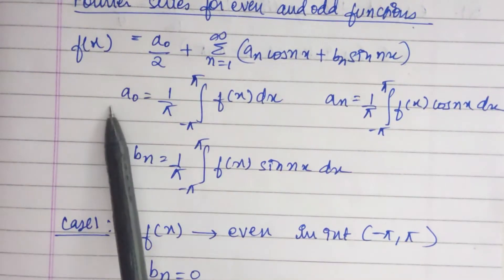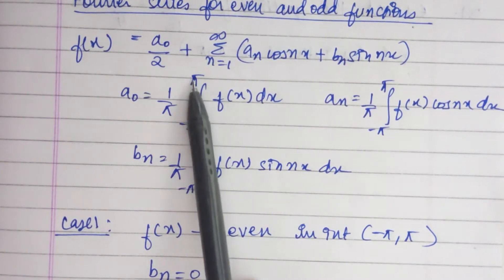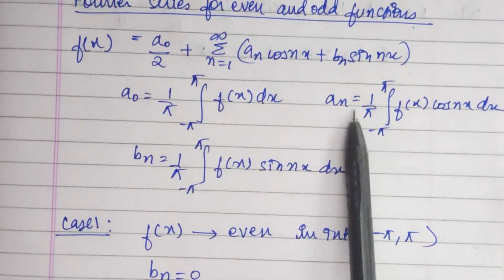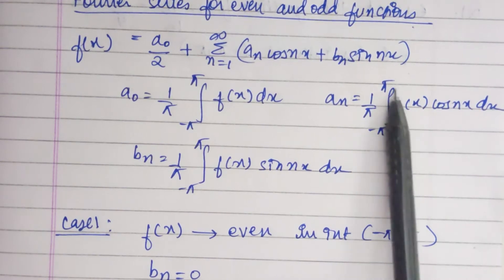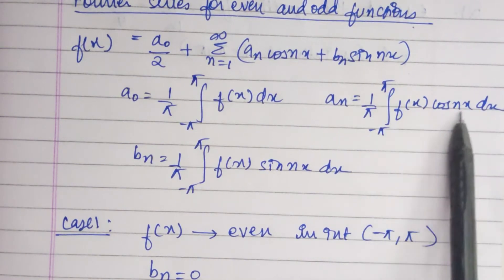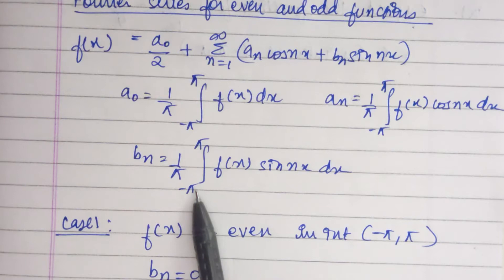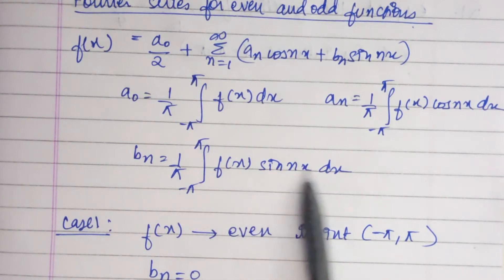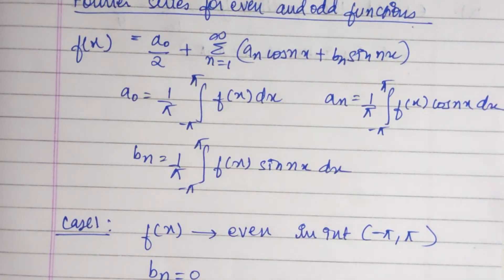The coefficients are: a naught equals 1 by pi times the integral from minus pi to pi of f of x dx; a n equals 1 by pi times the integral from minus pi to pi of f of x cos nx dx; and b n equals 1 by pi times the integral from minus pi to pi of f of x sin nx dx. These are the formulas we have already seen.